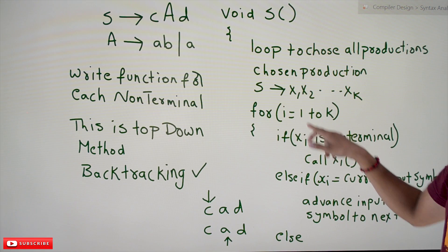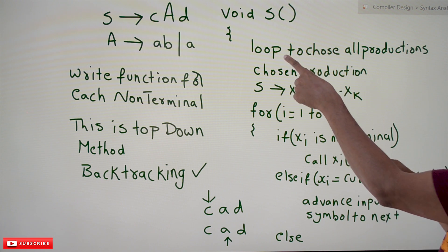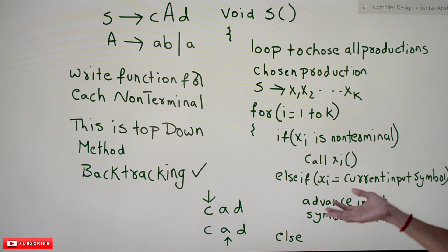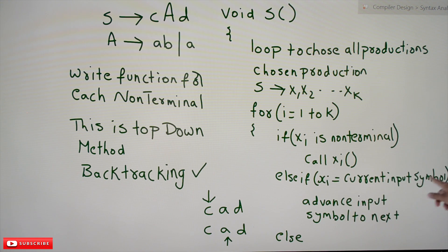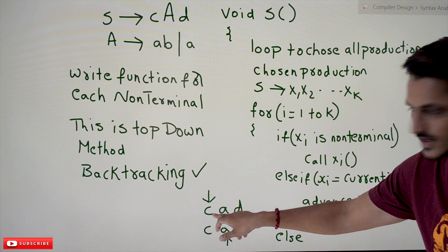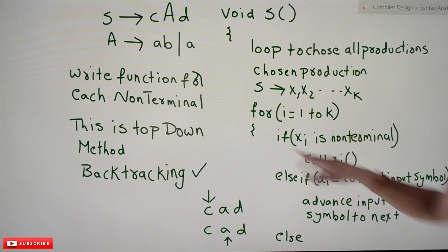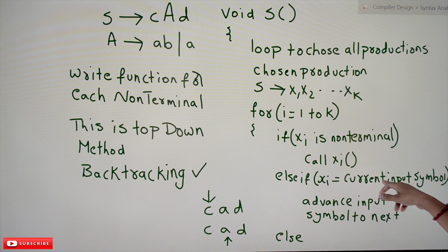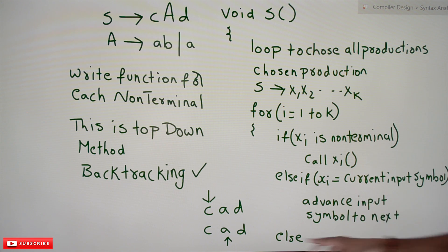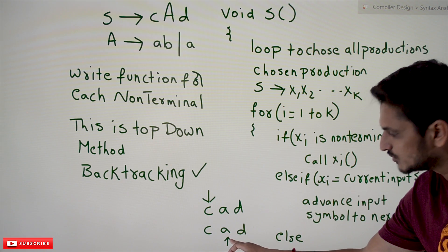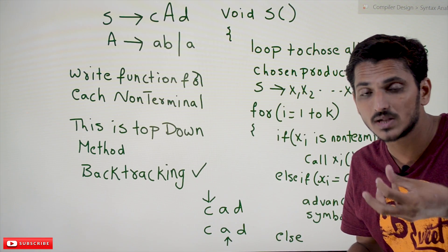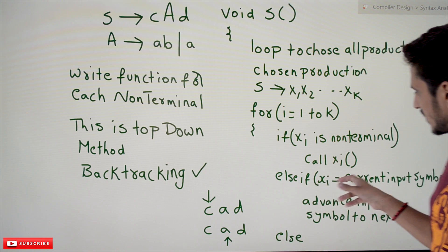For each symbol Xi, if it is a non-terminal we call its function; if it is a terminal we check whether Xi equals the current input symbol. For input string 'cad', the current input symbol is c. Xi is c and the current symbol is c, so they match. On a successful match, we advance to the next input symbol — we have identified c in S tends to c A d.